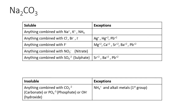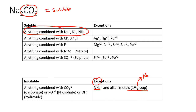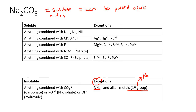For Na2CO3: here we know this is sodium, so anything combined with Na is soluble with no exceptions. You might say the CO3 rule says it should be insoluble — but the exception is anything in group 1, and Na is in group 1 on the periodic table. So this substance is soluble; the ions can be pulled apart.